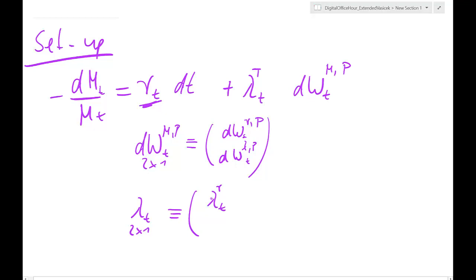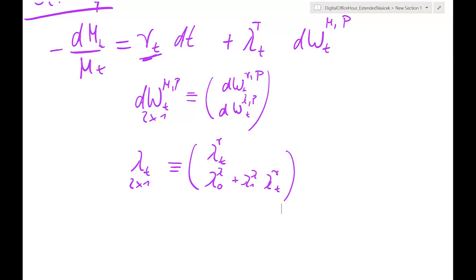I therefore need to assume that the market price of risk for shocks to the market price of risk is just an affine function in the market price of risk. That is a somewhat unusual setup, but it's a good one — you just need to get used to it. It's a good exercise.